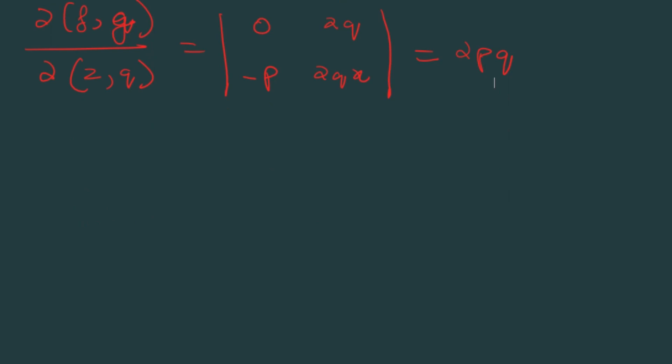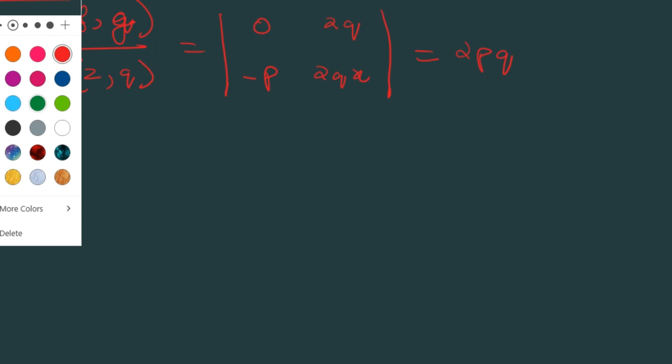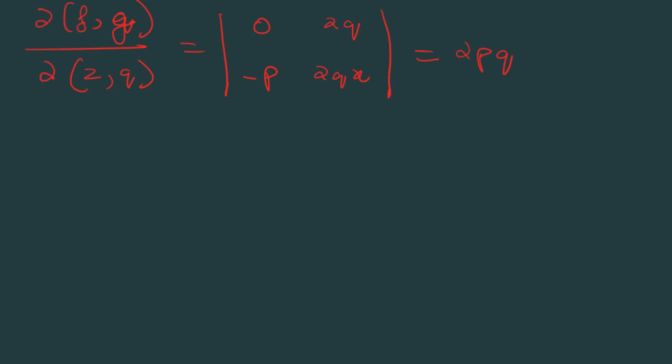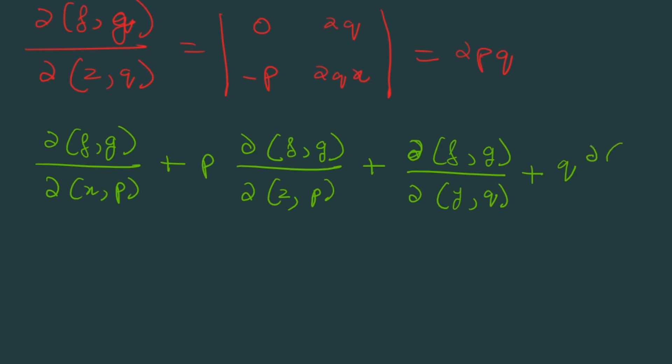After you have done all this, the compatibility is given in this way: ∂(f,g)/∂(x,p) + p·∂(f,g)/∂(z,p) + ∂(f,g)/∂(y,q) + q·∂(f,g)/∂(z,q) = 0.